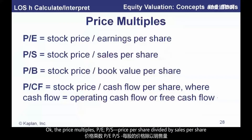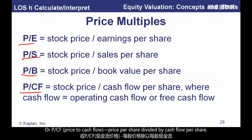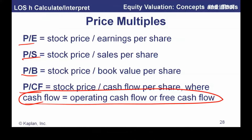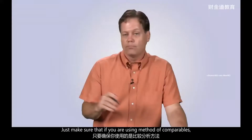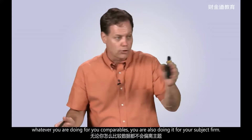Other price multiples: P/S is price per share divided by sales per share; P/B is price per share divided by book value per share; price to cash flow is price divided by cash flow per share, where cash flow can be operating cash flow, free cash flow, or something else. When using method of comparables, make sure that whatever you're doing for your comparables, you're also doing for your subject firm.